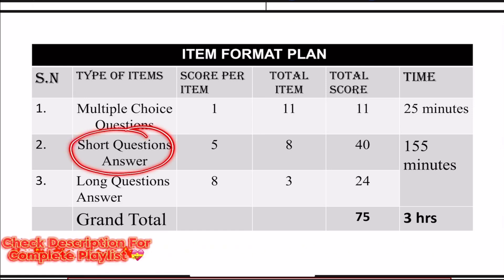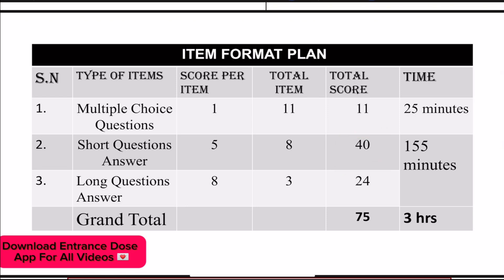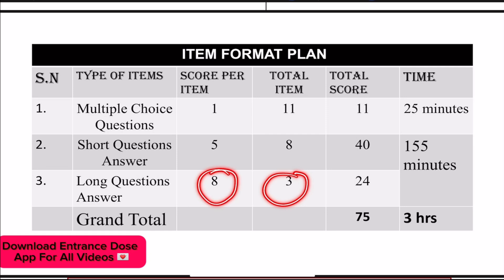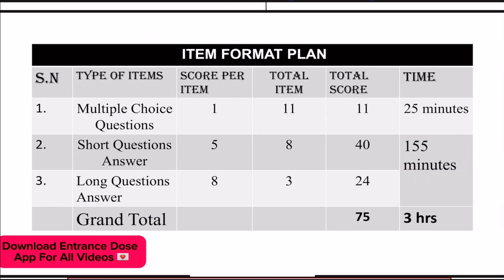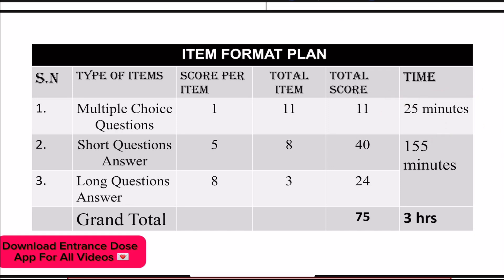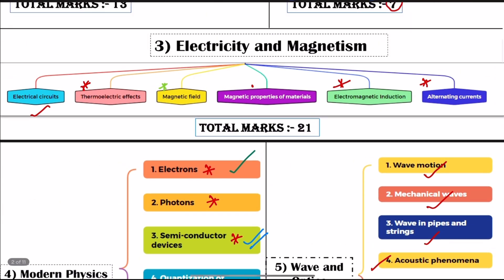Short answer questions are 5 marks each, so total 40 marks for short answer questions. Long questions are 8 marks each — 3 questions, so 24 marks total. The total is 75 marks, to be completed in 3 hours. This is the Physics exam structure.